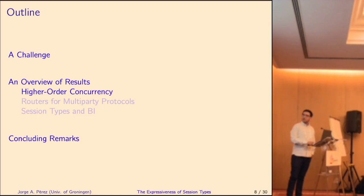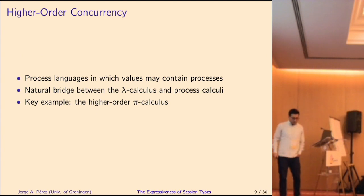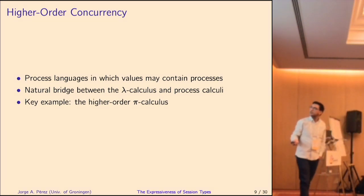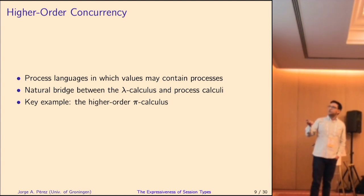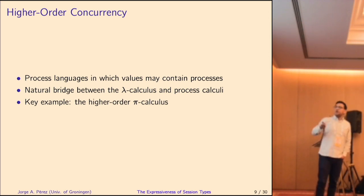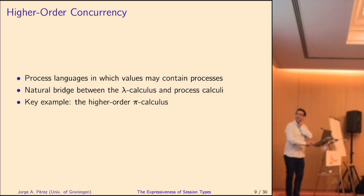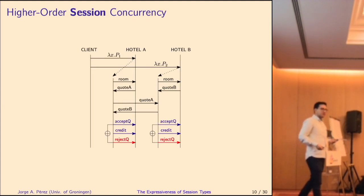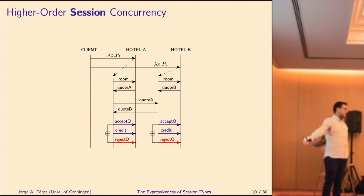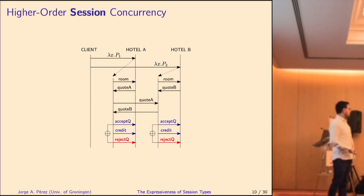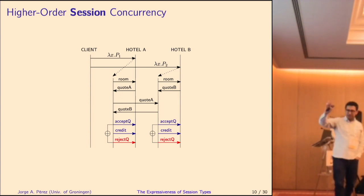I will talk about three things. The first has to do with higher-order concurrency — my way of referring to the traditional view of expressiveness. We have encodings, we have languages, and we would like to know whether one language can be encoded into another according to some correctness criteria. In higher-order concurrency, you have process calculi in which some values may contain processes. This is one of the natural bridges between the lambda calculus and things like the pi calculus, and the most famous language is the higher-order pi calculus.